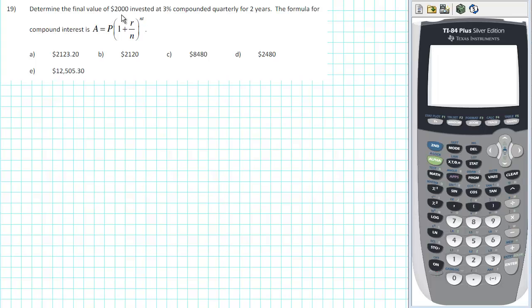Determine the final value of $2,000 invested at 3% compounded quarterly for 2 years. The formula for compound interest is A equals P times 1 plus R over N raised to the NT power.